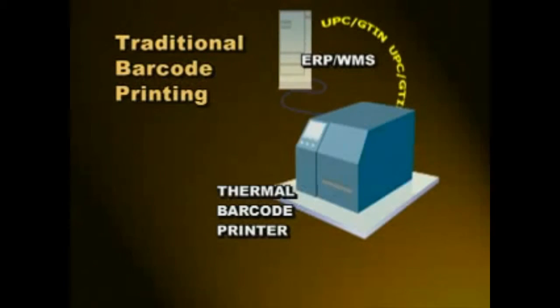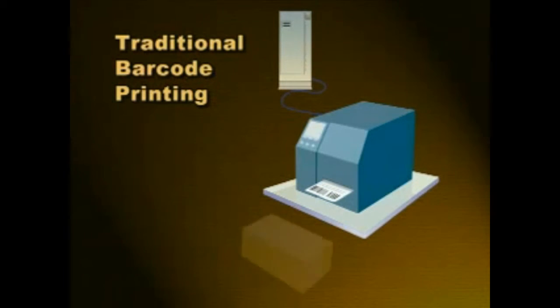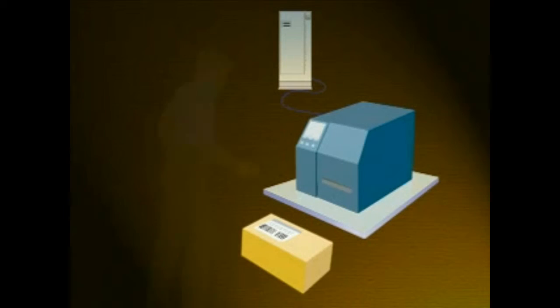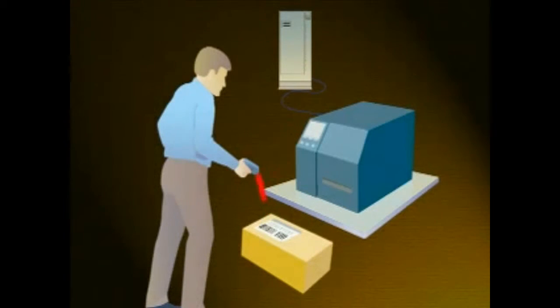In a traditional barcode system, a UPC-G10 print stream is sent to the printer to generate barcode labels that identify products, partners, and cases. Handheld or fixed line-of-sight scanners then read the barcode.